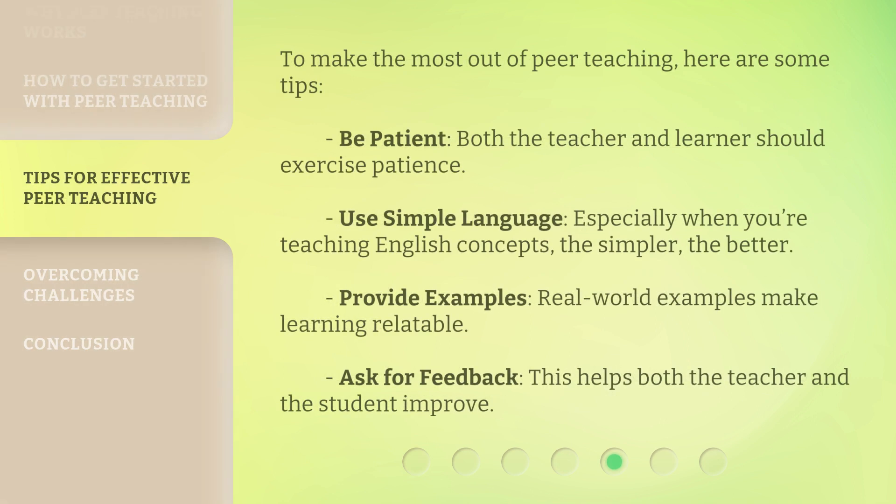To make the most out of peer teaching, here are some tips. Be patient — both the teacher and learner should exercise patience. Use simple language — especially when teaching English concepts, the simpler the better. Provide examples — real-world examples make learning relatable. Ask for feedback — this helps both the teacher and the student improve.